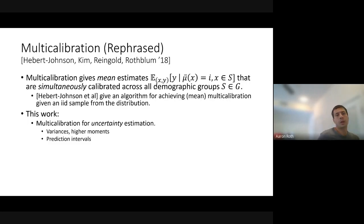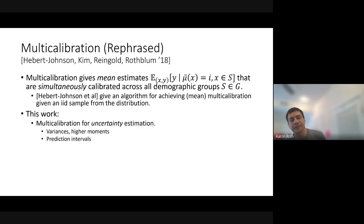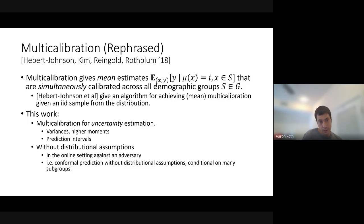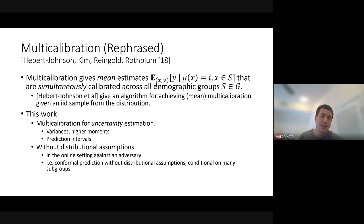Hebert-Johnson et al. give an algorithm for achieving this from finite samples. We're going to generalize multi-calibration to uncertainty estimation — showing how to achieve it not just for means but for variances and other higher moments, and how to get multi-calibrated prediction intervals. We can also obtain these results not just in the batch distributional setting but in an online setting against an adversary, which solves the problem that the conformal prediction literature aims to solve, but without any distributional assumptions and with conditional guarantees for subgroups.